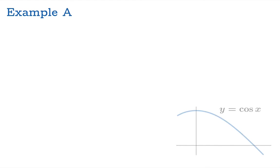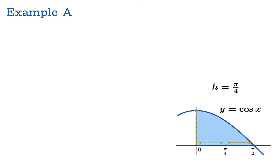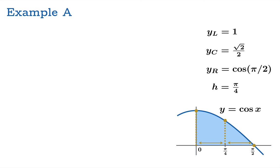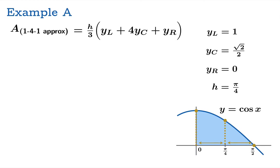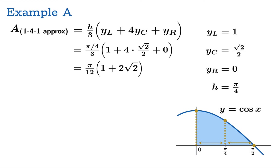Let's take a look at an example. We're going to take the graph of cosine on the interval from 0 to π/2 and use the 1-4-1 approximation to approximate the signed area. The midpoint is π/4, so the half width h is also π/4. The function values are: yl = cos(0) = 1, yc = cos(π/4) = √2/2, and yr = cos(π/2) = 0. Plugging into our template, when all the dust settles, you get π/12 times (1 plus 2√2).